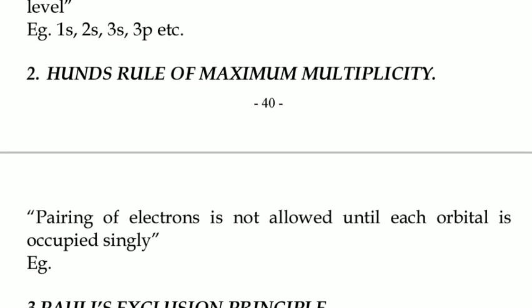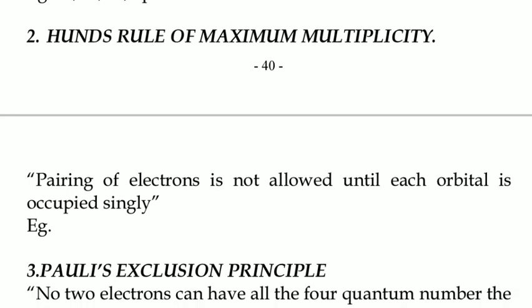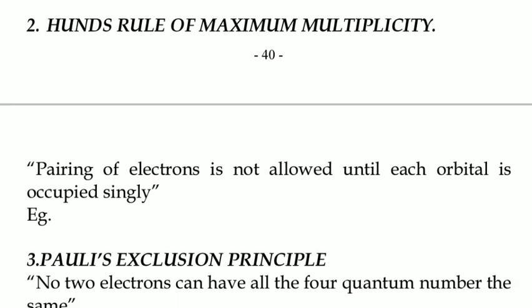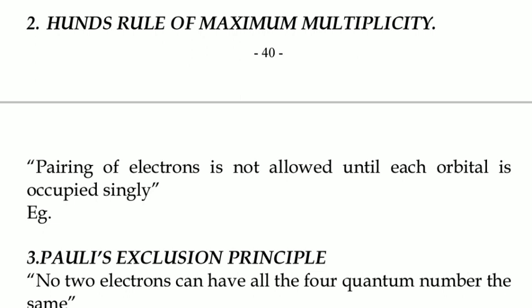The second rule is Hund's rule of maximum multiplicity. Hund's rule states that pairing of electrons is not allowed until each orbital is occupied singly. We draw orbitals as boxes, and until every box is filled with one electron, then we can start pairing them.